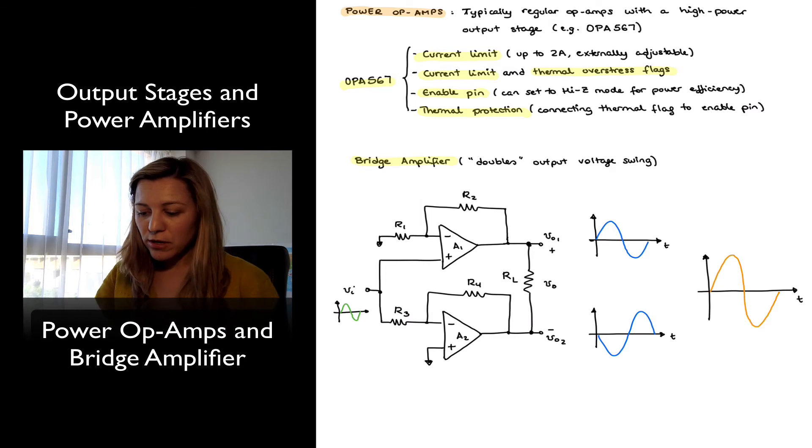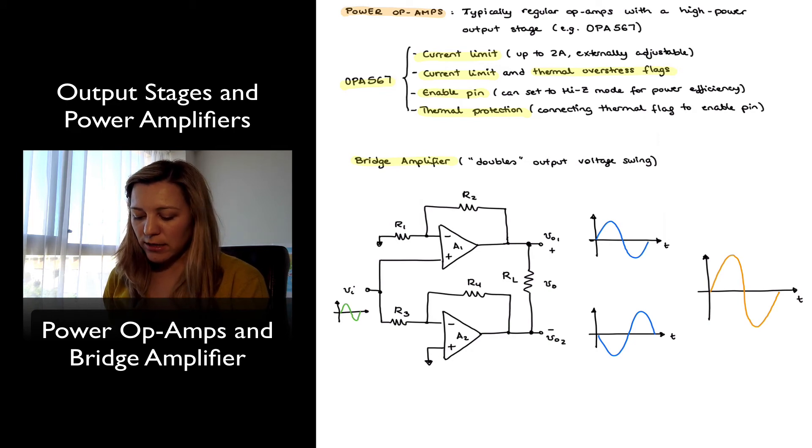To take a look at how that works, I have drawn the circuit here. Notice that the input signal is connected to two power op-amps, A1 and A2. One of them is connected as a non-inverting amplifier, that would be A1 in this case, where the input signal is fed into the non-inverting input terminal, and the other one is connected as an inverting amplifier, where the input signal is fed into the inverting input terminal.